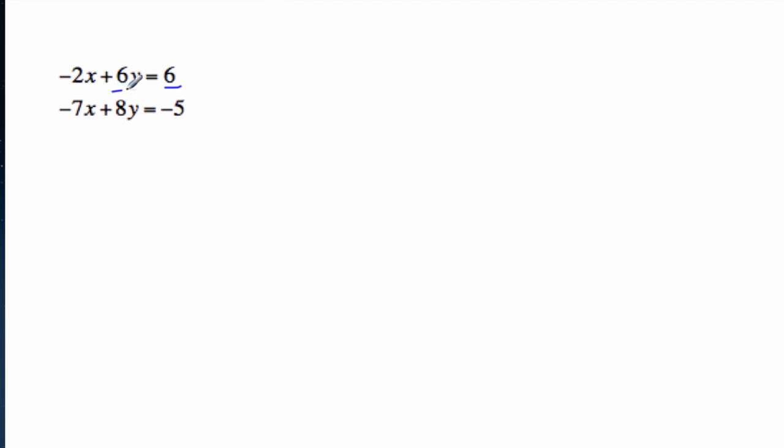But one thing I do notice, what do you notice about 6, 6, and negative 2? They are all even numbers. Okay, so if I divide everything by negative 2, so negative 2 divided by negative 2, or here's another, plus 6 over negative 2y is equal to 6 over negative 2. This gives me x minus 3y equals minus 3. Now I have a single x.